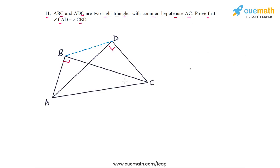Here is a figure drawn for this problem. ABC and ADC are right-angled triangles, right-angled at B and D respectively, with common hypotenuse AC. B and D have been joined using a dotted line, and we need to prove that angle CAD and angle CBD are equal.